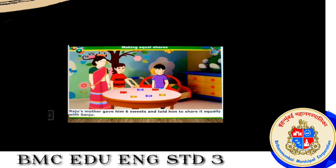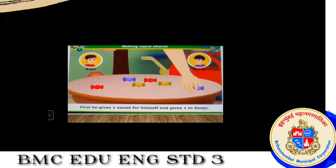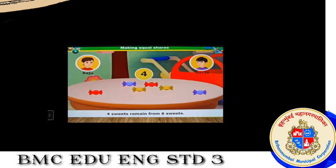In this picture, there are two boys and their mother. Raju's mother gave him six sweets and told him to share them equally with Sanju. So Raju will distribute the six sweets. First, he gives one sweet for himself and one sweet to Sanju. After distributing one each, four sweets remain from the six.